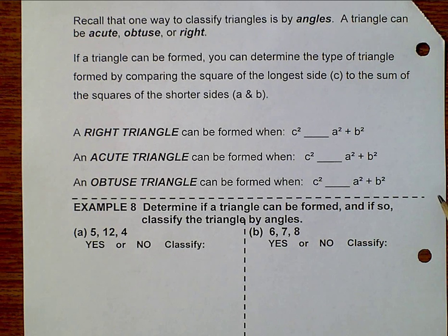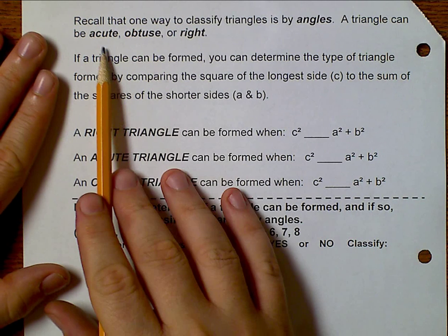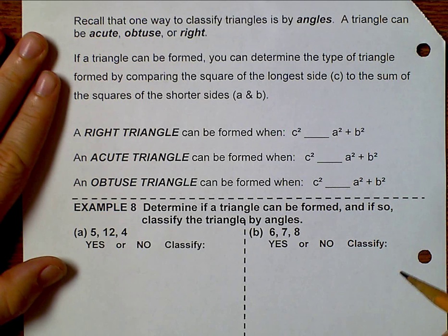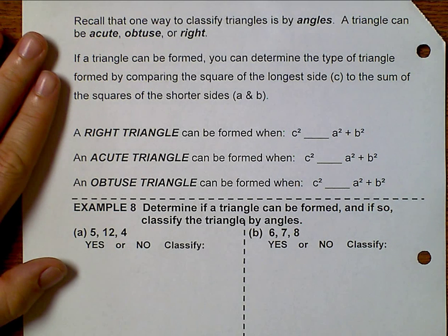I can actually take that a step further and use that to classify triangles. So given the sides, we can very easily classify it as scalene, isosceles, or equilateral. But what I want you to know is that we can also go ahead and classify them by angles if we know the sides. And that's based on the converse of the Pythagorean Theorem.